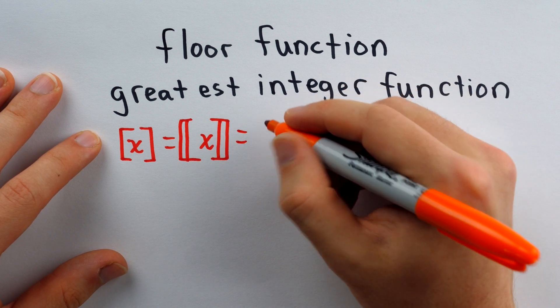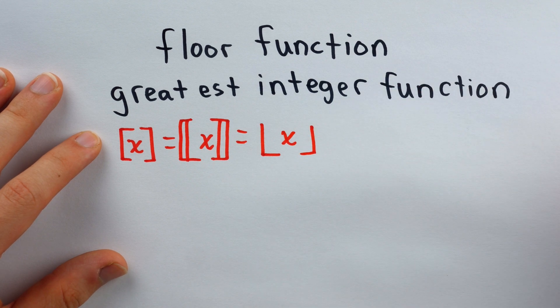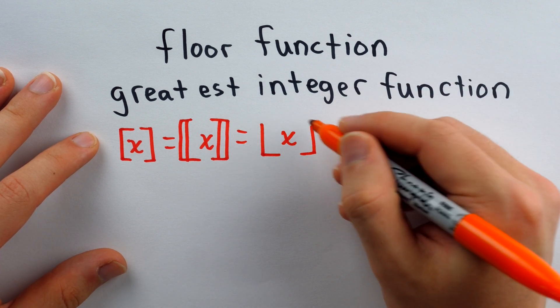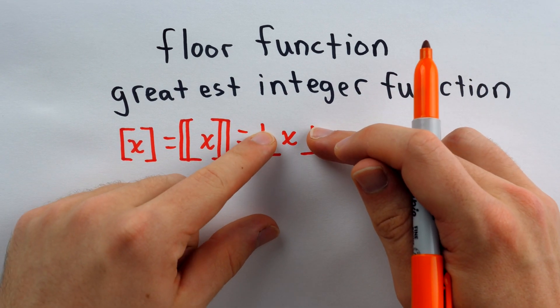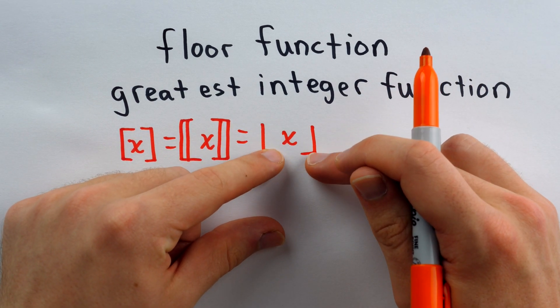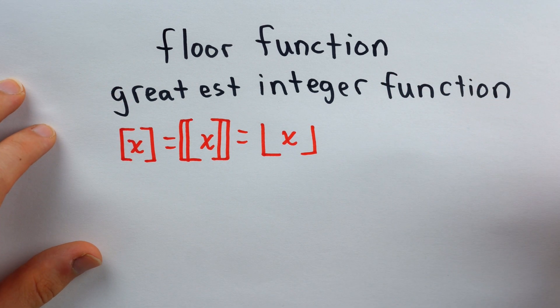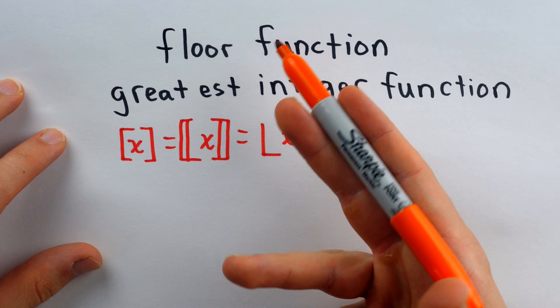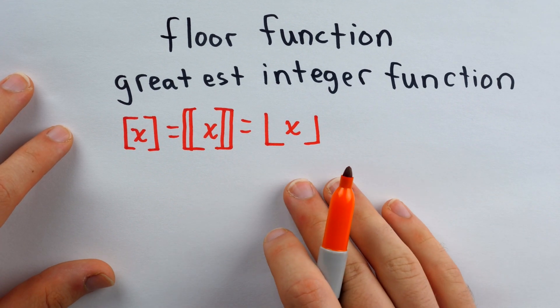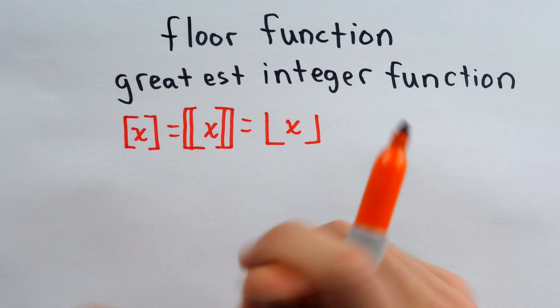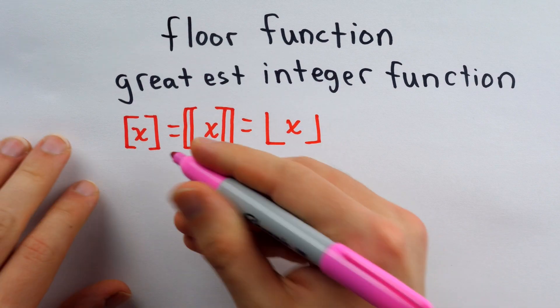But then another very popular way that's more modern is like this. This is how I like to write the floor function. This notation, I think, speaks most closely to the behavior of the function, which is that it rounds the input down to the floor. The output of the greatest integer function is the greatest integer that's less than or equal to the input. Why don't we just run through a couple quick examples to make sure that the behavior of this function is clear.